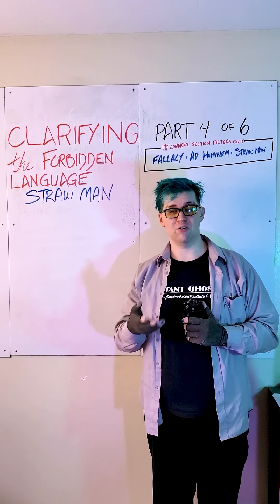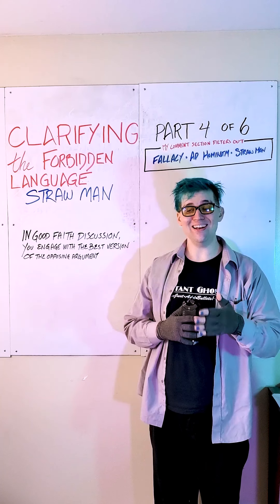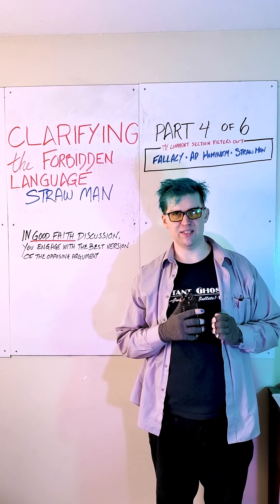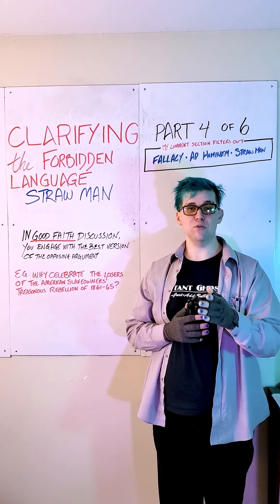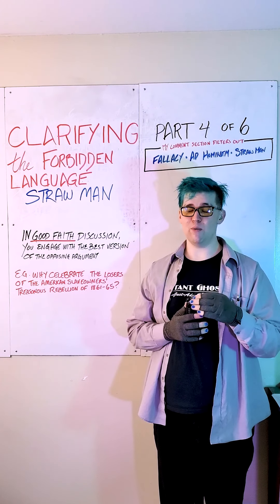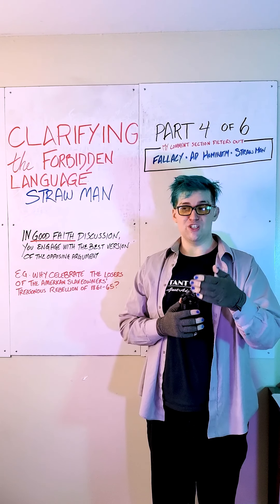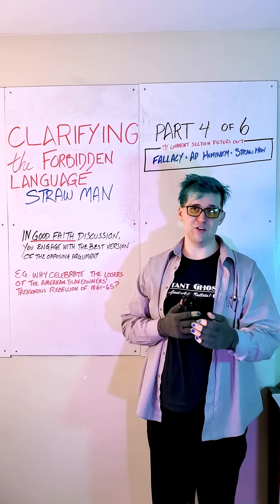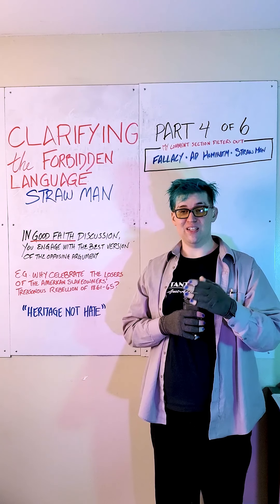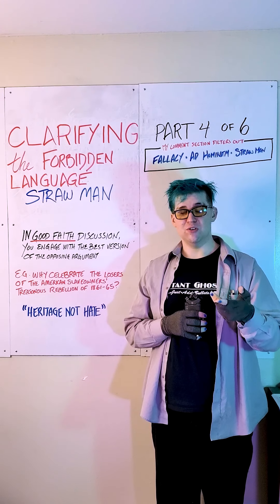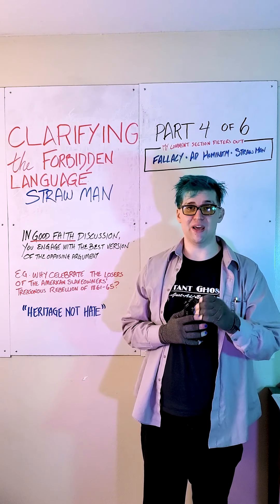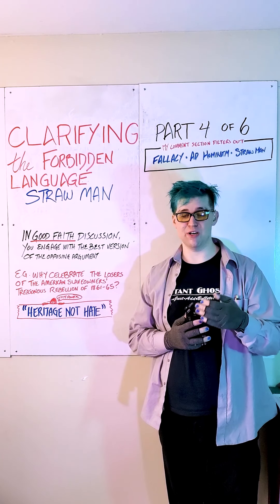A strawman is when you misrepresent the opposing argument in order to performatively defeat it. In a good faith discussion, you do need to make an effort to engage with the best possible version of the opposing argument. But not every opposing argument is advanced in good faith. Take as an example the people who choose to celebrate the losers of the American slaveholders' treasonous rebellion of 1861–65, usually by waving flags or defending statues. The purpose of this celebration of anti-American human traffickers is to uphold white supremacist values and promote fear in Americans of color, especially black Americans. The best possible argument these white supremacists will advance is that they're celebrating their cultural identity and heritage, not the politics associated with that identity.